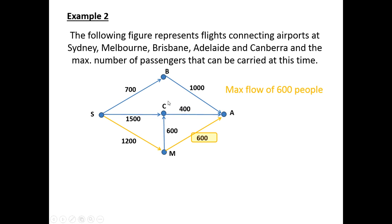Finally, you can go from Sydney to Melbourne to Adelaide. 1200 from Sydney to Melbourne, but we're restricted once again from Melbourne to Adelaide by 600. It has a maximum flow of 600 people.